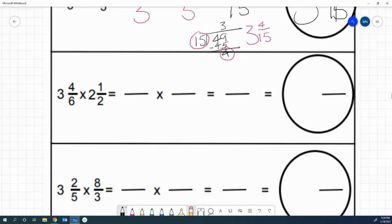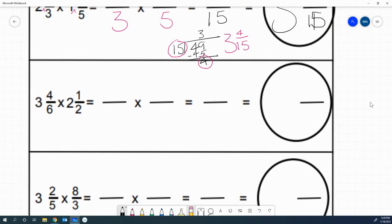For this next one, it's 3 and 4 6 times 2 and 1 half. Go ahead and turn the 3 and 4 6 into an improper fraction for me, please. For 3 and 4 6, you should have said 6 times 3 is 18, plus 4 is 22, over 6. Go ahead and turn 2 and 1 half into an improper fraction. For 2 and 1 half, you should have said 2 times 2 is 4, plus 1 is 5 over 2. So as you can see, we've got 22 over 6 times 5 over 2.